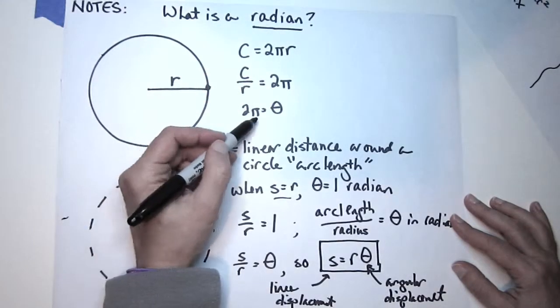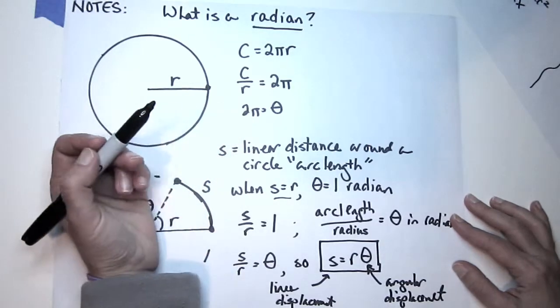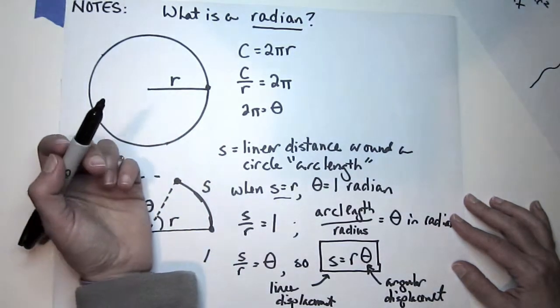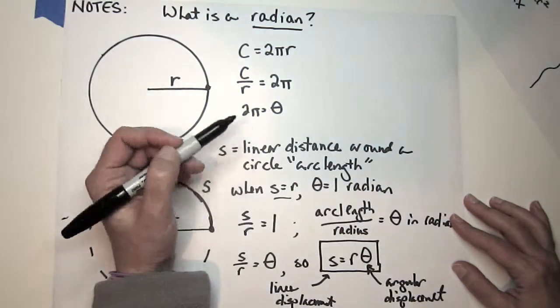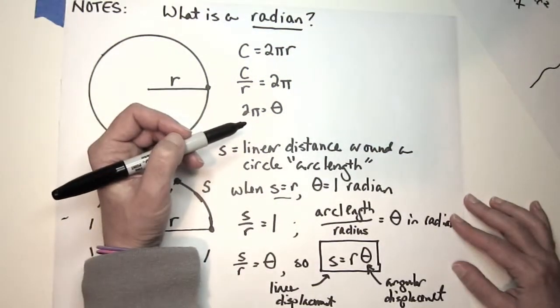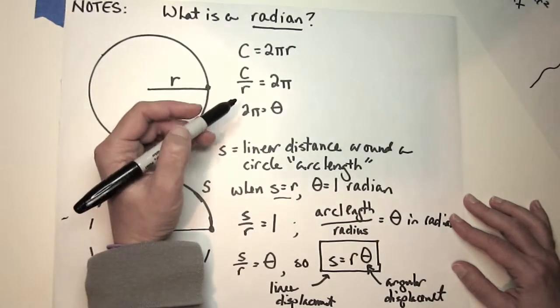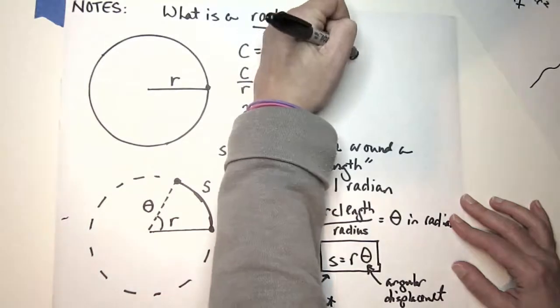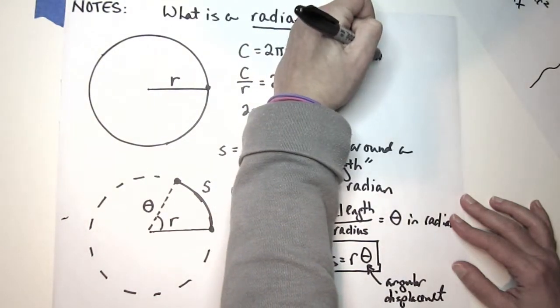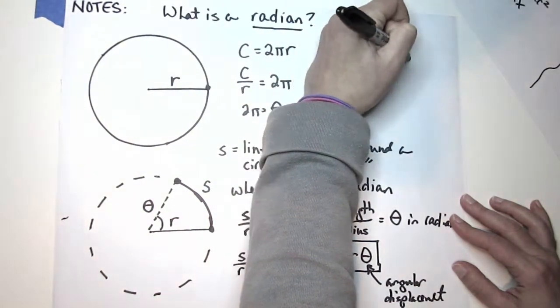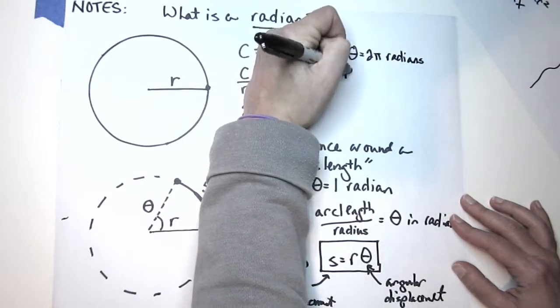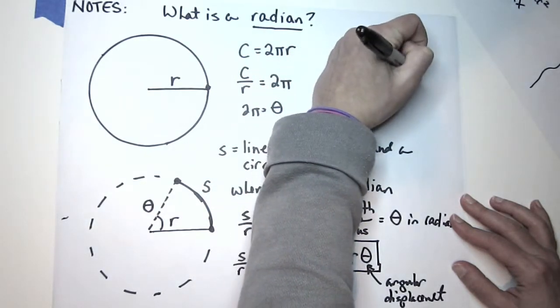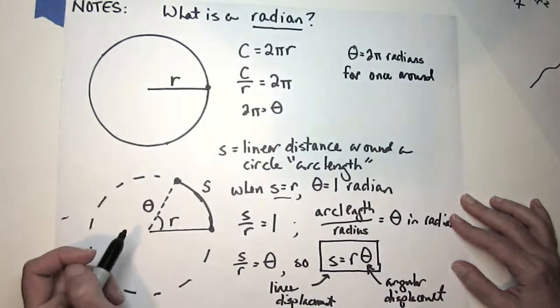In math, you almost never write 'rad' or something after an angular measure. In physics though, just for clarity, a lot of times we do write radians, we do represent radians in our work. So it wouldn't be uncommon for you to say for once around, theta equals 2π radians.